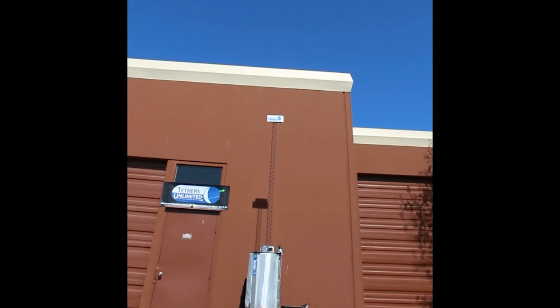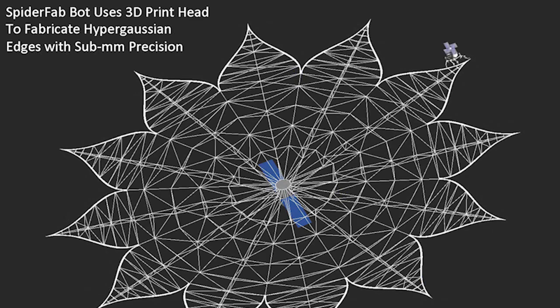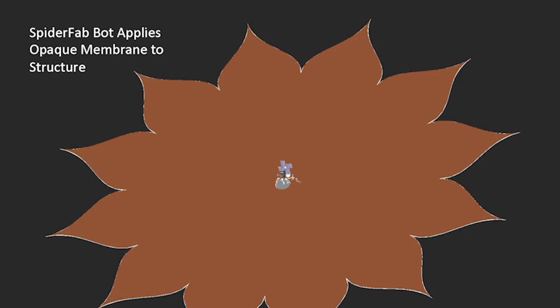So this is the initial phase one prototype. It basically takes as feedstock spools of carbon fiber material and uses an additive manufacturing process to fabricate an extremely high-performance carbon fiber truss. With a very small volume of material, we can make ridiculously large structures.